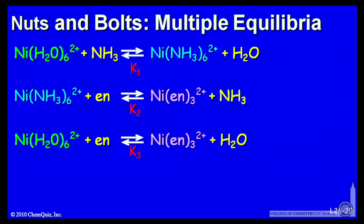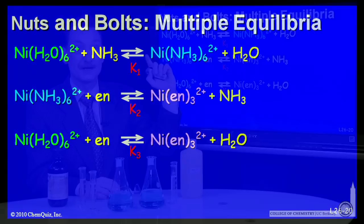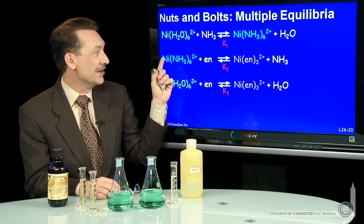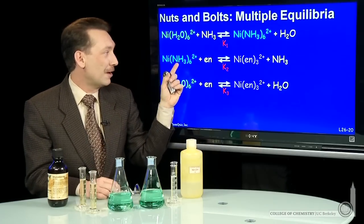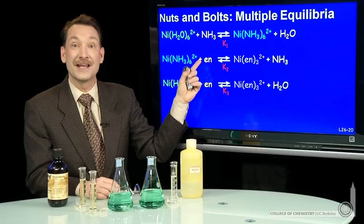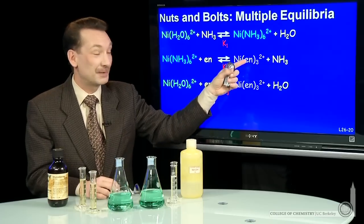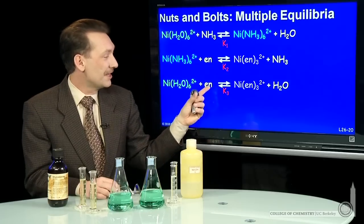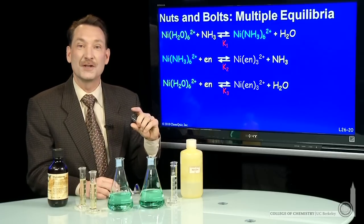Here I've written them out more explicitly to help write equilibrium constants. I have ammonia as a reactant displacing the water. Here, the nickel ammonia complex with ethylenediamine as a reactant displacing that. This is the K we want to determine. Here's the ethylenediamine displacing water.